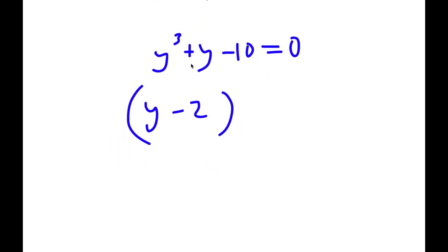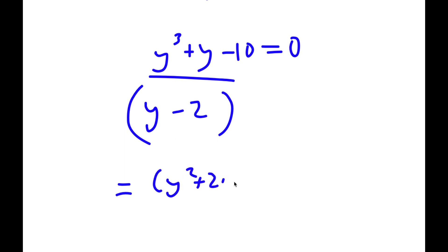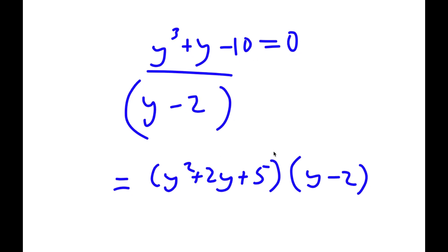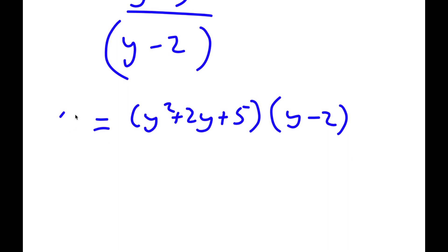So now to solve this, I actually have to divide y to the power of 3 plus y minus 10 over y minus 2. You can do this using long division or synthetic division, and you get that this is the same thing as y squared plus 2y plus 5 times y minus 2. So y to the power of 3 plus y minus 10 equals y squared plus 2y plus 5 times y minus 2, and this equals 0.